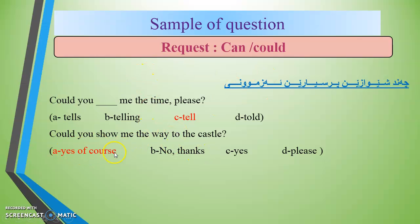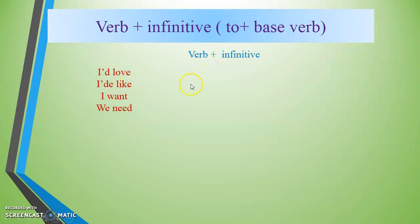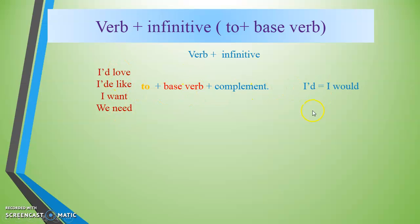Now the verb infinitive. The infinitive means 'to + base verb.' We use it after verbs like: I'd love to, I'd like to, I want to, we need to. The infinitive is formed with 'to' followed by the base form of the verb.